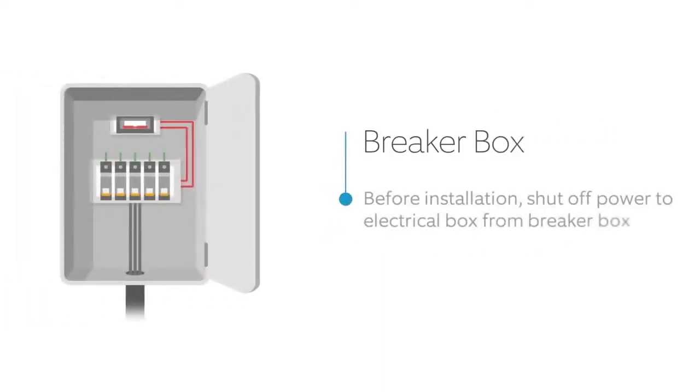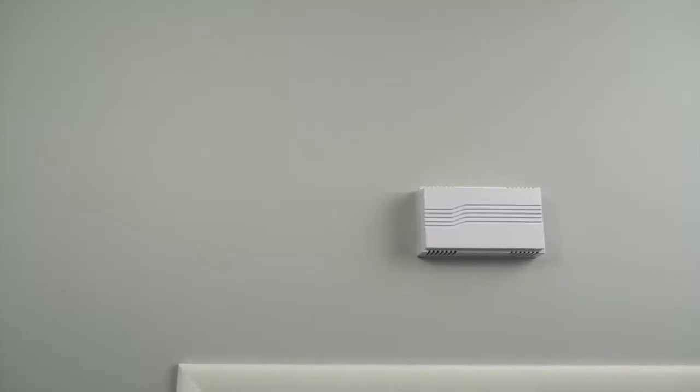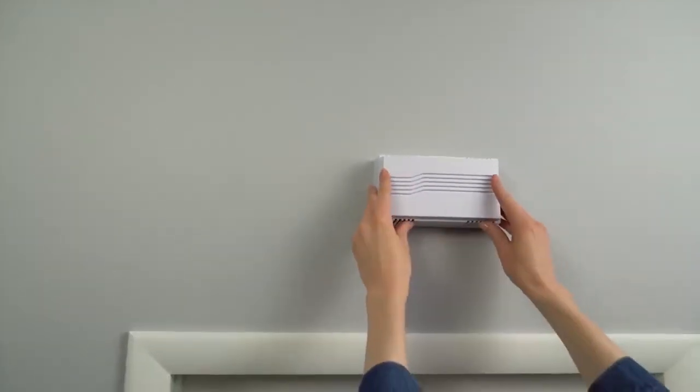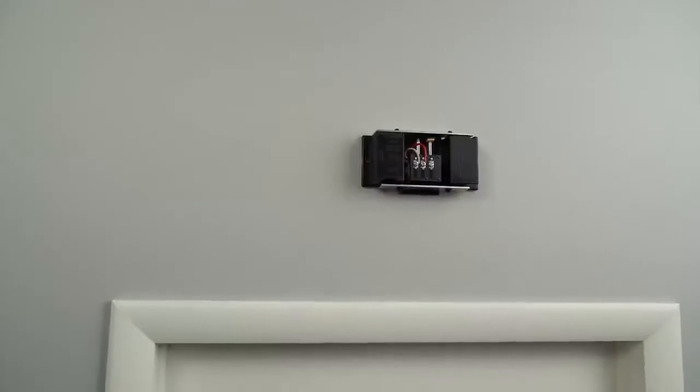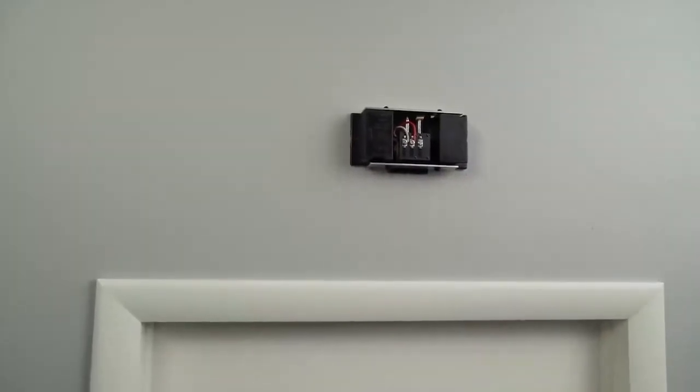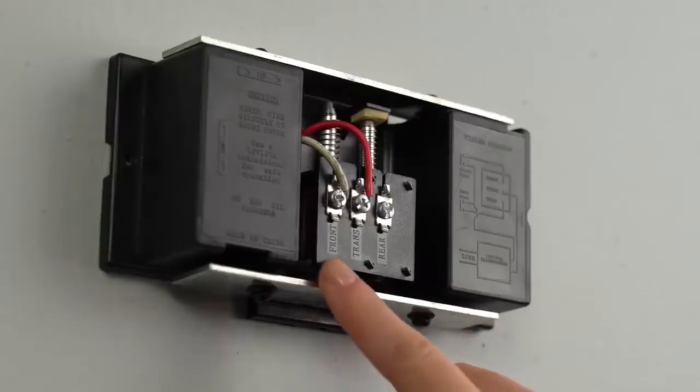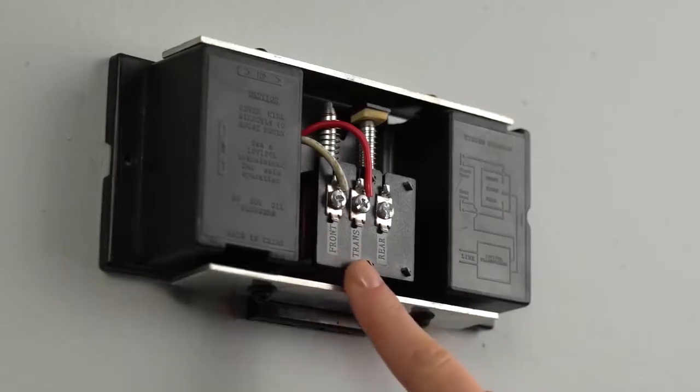First, shut off the power to your doorbell at the breaker. Then locate your internal doorbell and remove the cover. Look for two wires on your internal doorbell. If there are more than two, look for a wire labeled front and one labeled transformer.